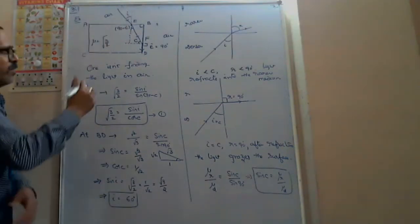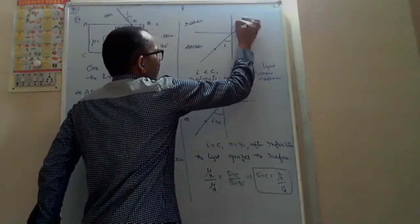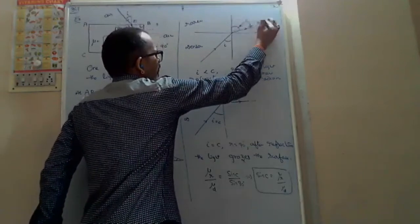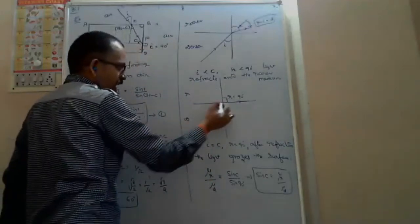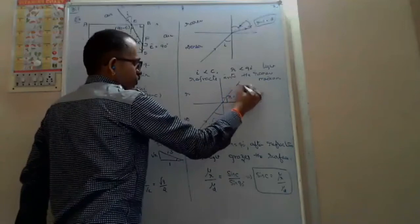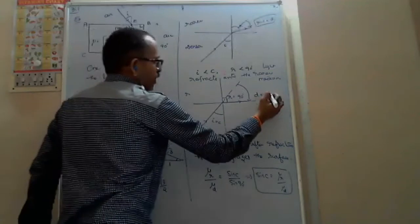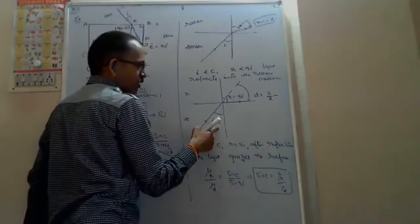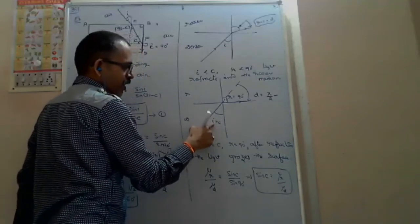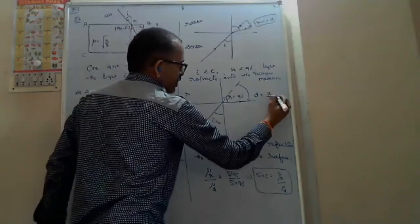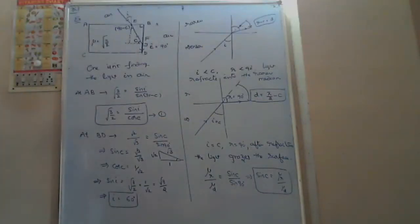At the time of critical angle, the angle of deviation is 90 minus i, which equals 90 minus c. The deviation when grazing is 90 minus c.